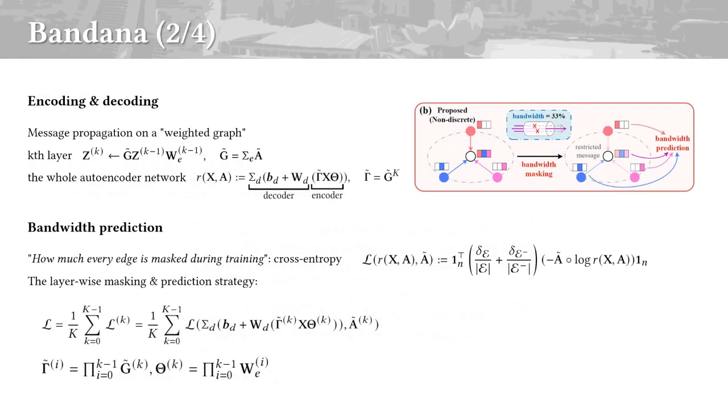Bandana's encoder network propagates messages weighted by random bandwidth values. Then, the decoder outputs a logit that predicts how much every edge is masked during training, that is the bandwidth value of each edge, by a cross-entropy objective. We perform the bandwidth masking and prediction on every layer of the encoder to further improve the performance.